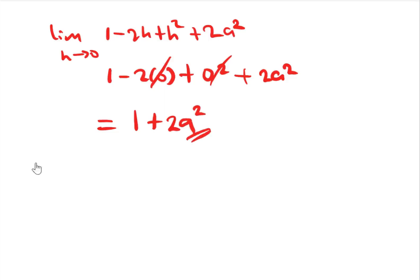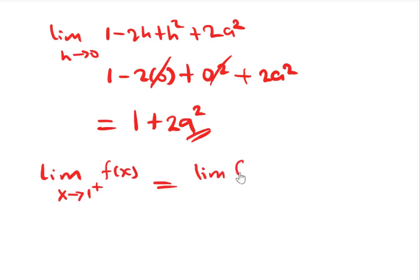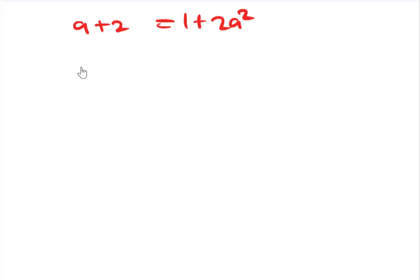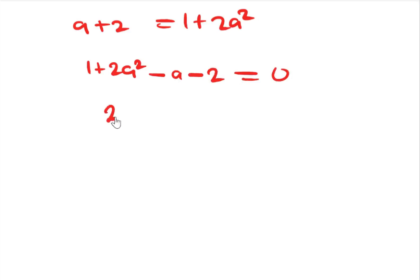We know that the left hand limit equals the right hand limit. So setting a plus 2 equal to 1 plus 2a squared and simplifying, we get 1 plus 2a squared minus a minus 2 equals 0, which gives 2a squared minus a minus 1 equals 0. This is a quadratic expression, and we need to solve for a.